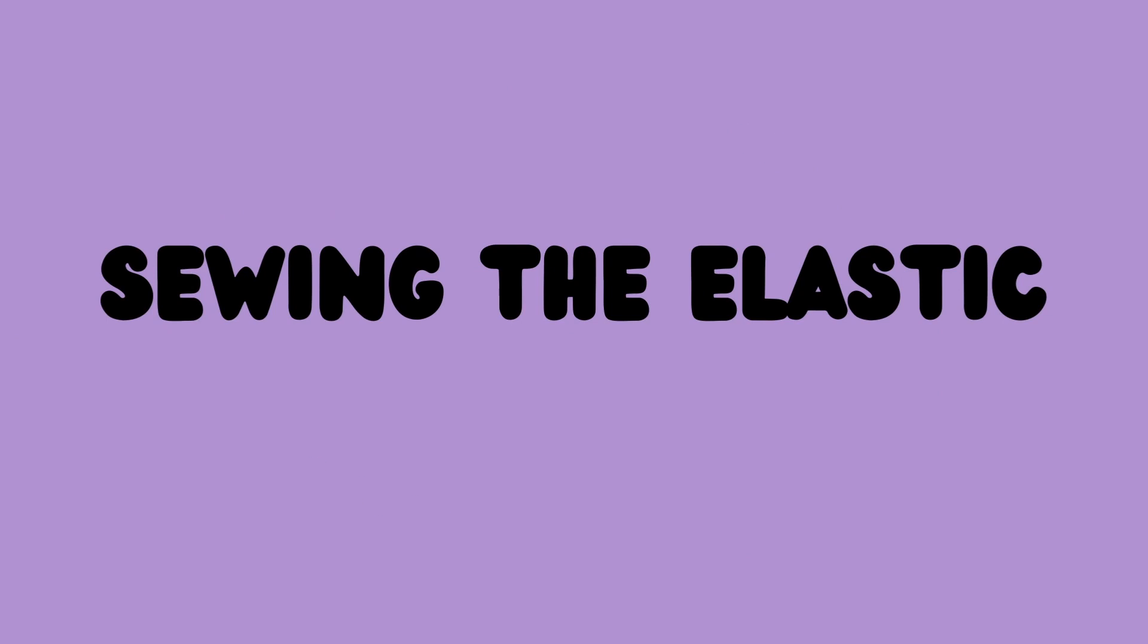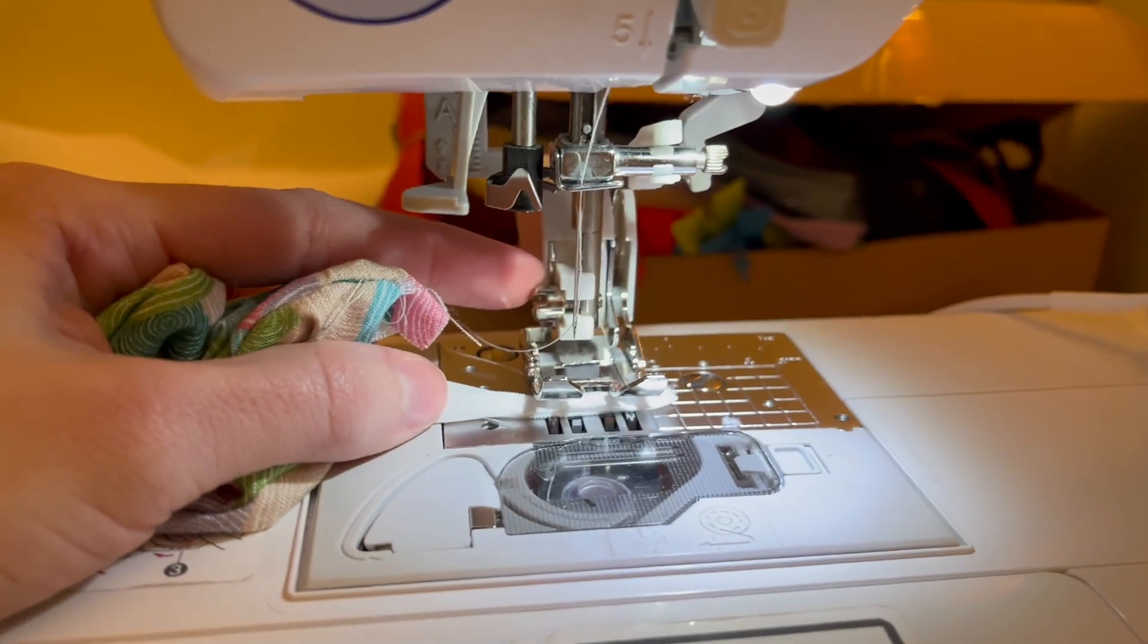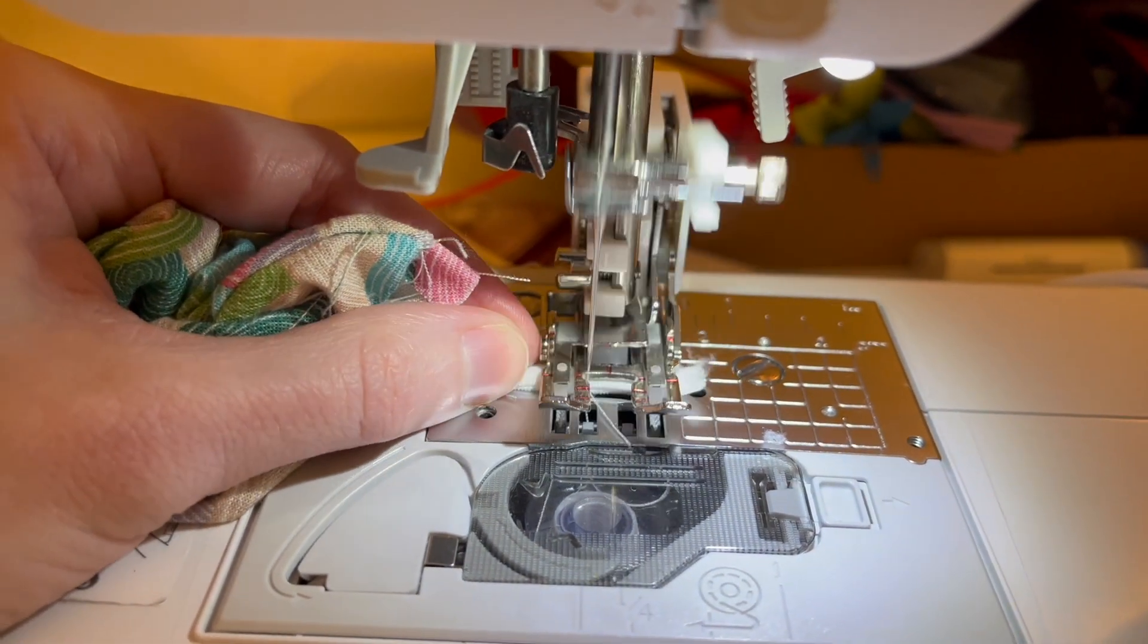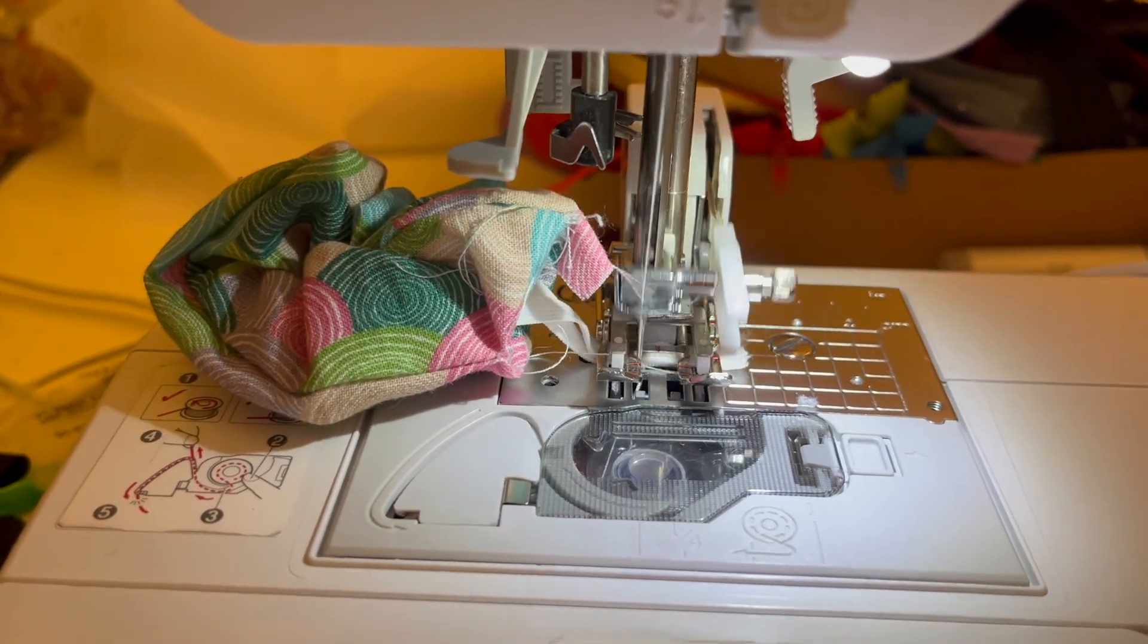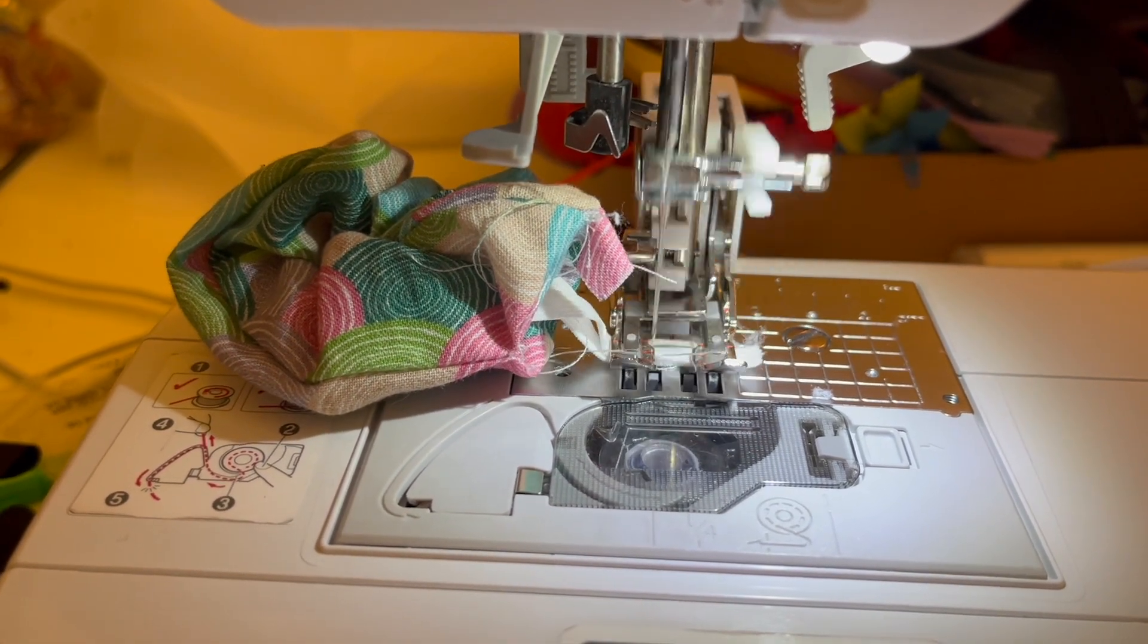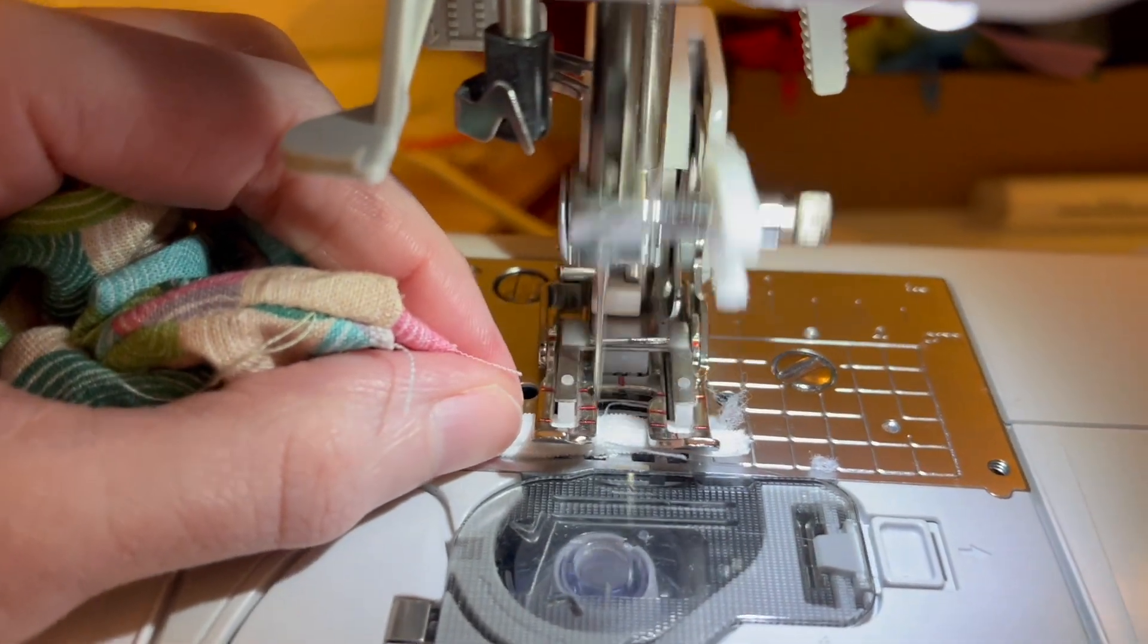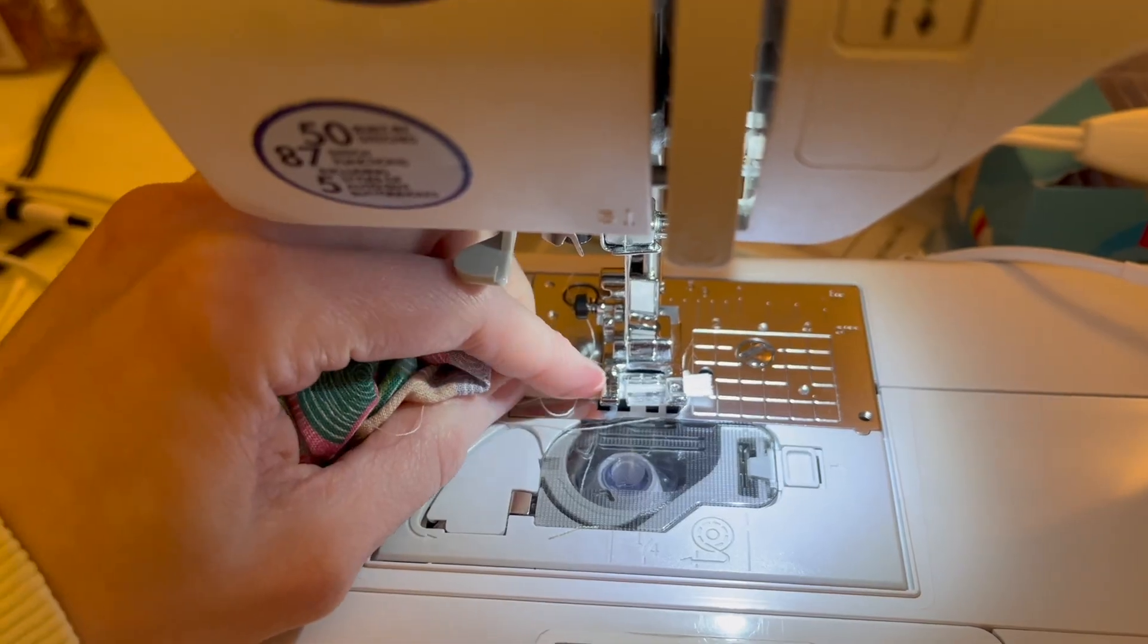Once we have that done is now time to sew in the elastic. Now sewing the elastic can be a little challenging one way to solve this is to use a walking foot. So a walking foot is going to give you motion and push from both the top and the bottom thanks to the way it is set up and it's going to make it so much easier to sew in your elastic. I will agree though that a walking foot is kind of heavy it is a lot and not everybody has one on hand so there are other ways we can do this.